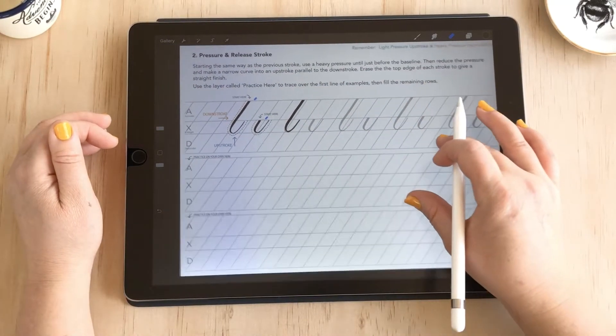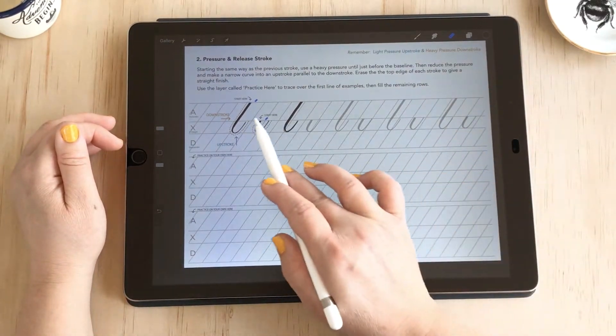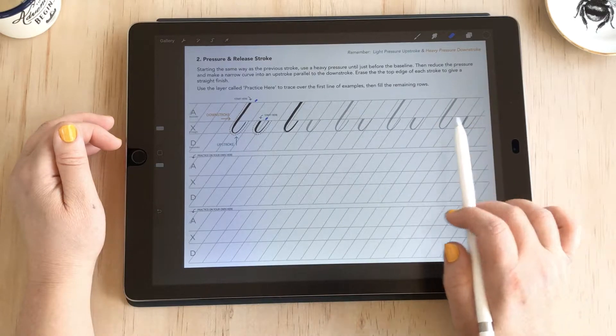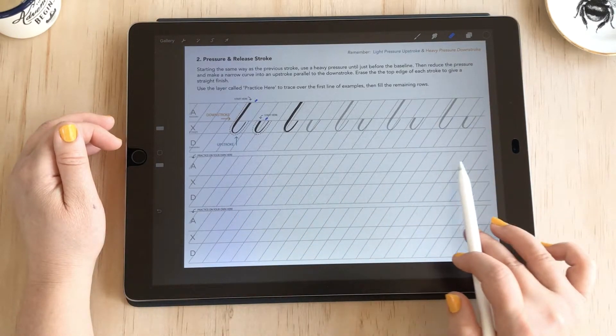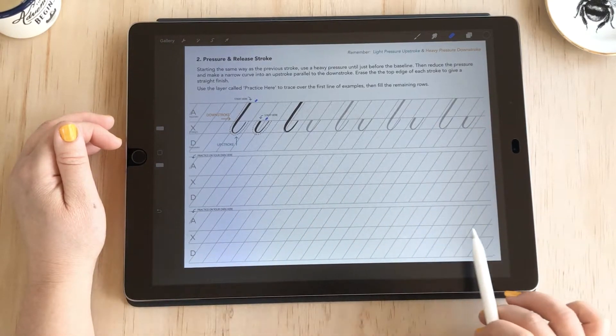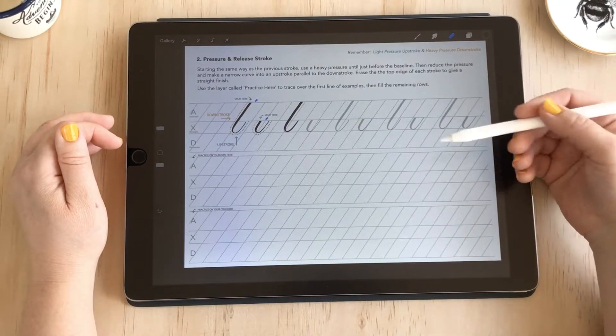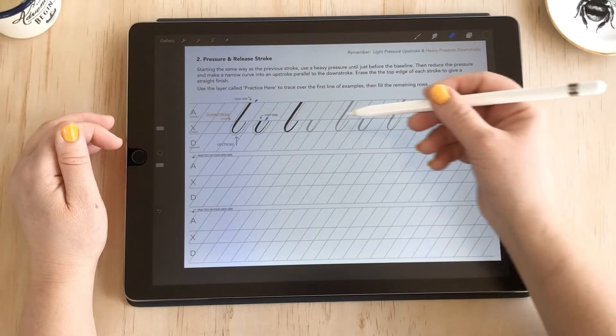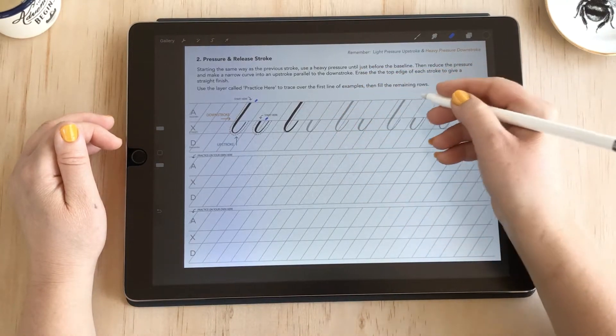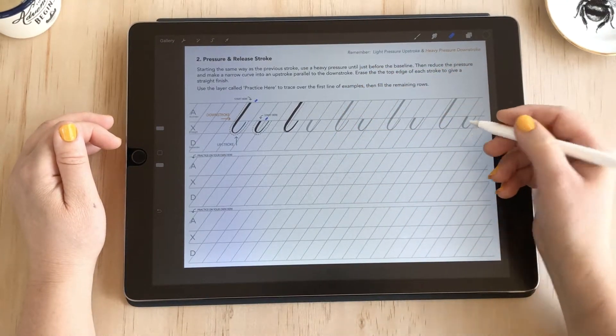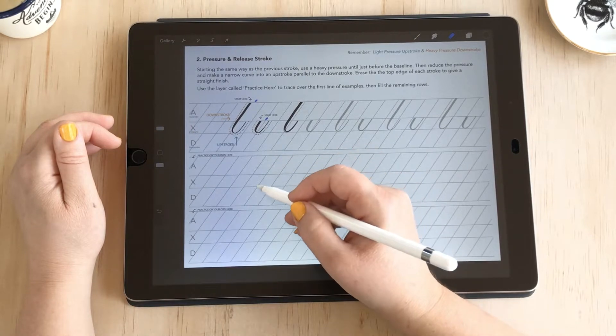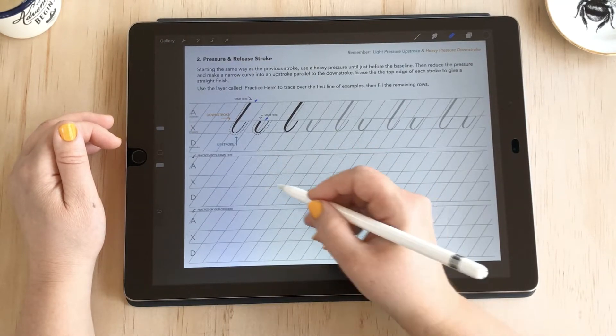The guidelines are laid out so you can trace the first row at the top, and then you have two spare rows below to practice on your own. This is a way to build your muscle memory about these strokes. You get familiar with the flow, rhythm, and how the curves are shaped. Then you come down and repeat that on your own. You have the first line of examples open so you can compare how you're going.